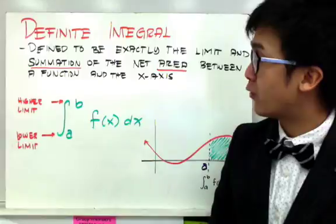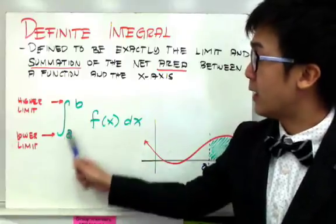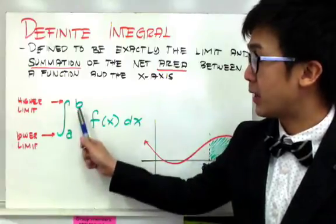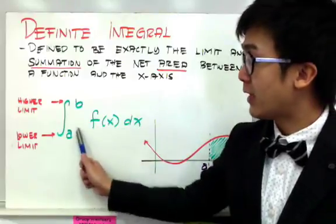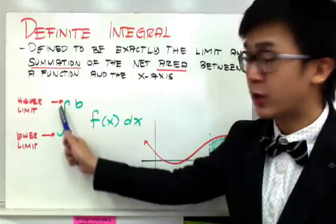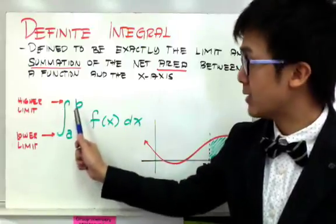Now, your notation for today for a definite integral will be the integral from a through b of your function f of x dx. Your a here is your lower limit, and your b will be your upper or higher limit.